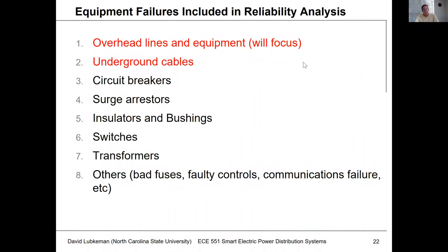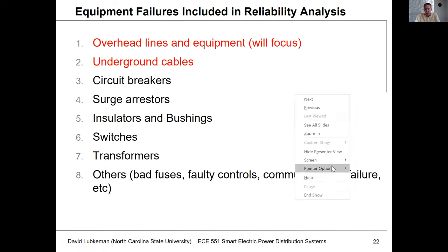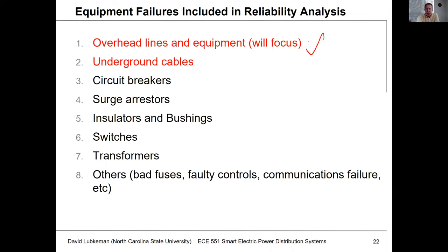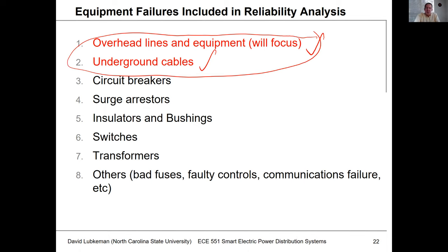We're going to take a look at different events that could happen that will impact our reliability. We're going to be focusing more on overhead lines and overhead equipment, because that's where most of the action is. We'll talk briefly about underground, but there could be issues with any item in the field like circuit breakers, surge arresters, or insulation. Primarily, you're going to have reliability issues with feeders — overhead and underground.